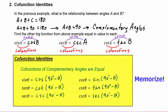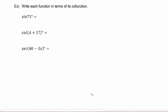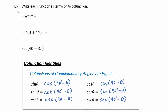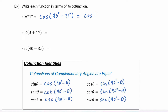You're going to need to memorize these identities because you will use them many, many times throughout the semester. In the next example, we have to write each function in terms of its co-function. For sine of 71 degrees, using our co-function identity, sine of theta equals cosine of 90 degrees minus theta, so this becomes cosine of 90 minus 71 degrees, which simplifies to cosine of 19 degrees.